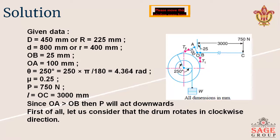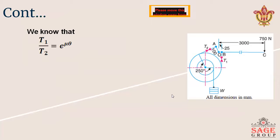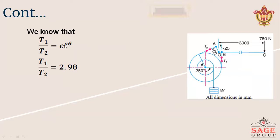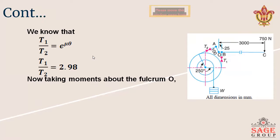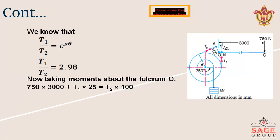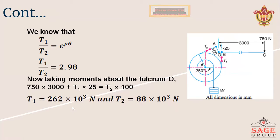First, let us consider the drum rotates in the clockwise direction. For clockwise direction, T1 upon T2 equals e raised to the power mu theta, which gives T1 upon T2 equals 2.98 by substituting the values of mu and theta. Now taking moment about fulcrum O: 750 into 3000, plus T1 into 25 — both forces in the same direction — minus T2 into 100. From this equation we obtain the values of T1 and T2.